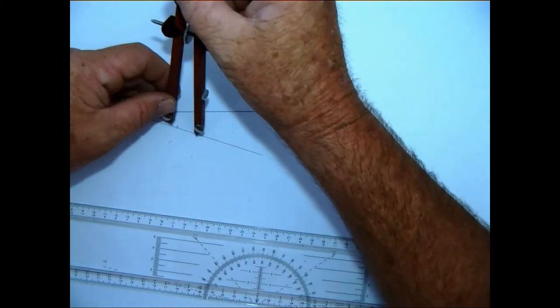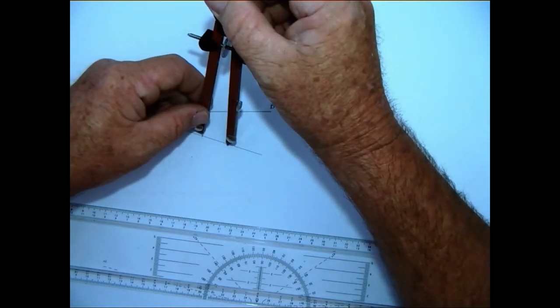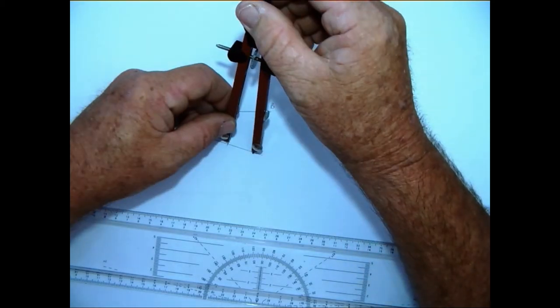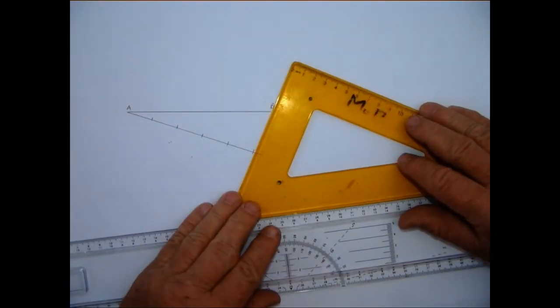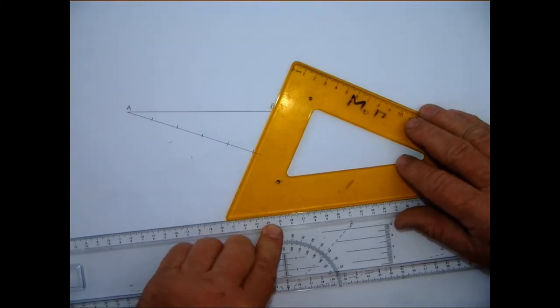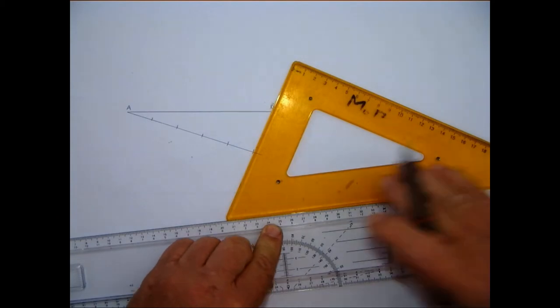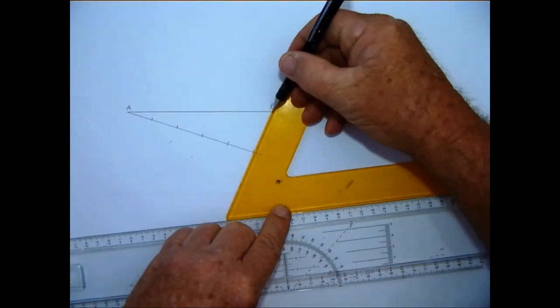What you do now is you put your compass on any dimension and you divide that inclined line into, say for instance, five divisions: one, two, three, four, and five divisions. And what we do now is we set up our set square with our T-square. You can see that they are not on the board itself.